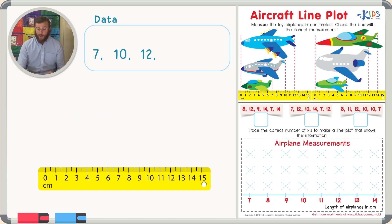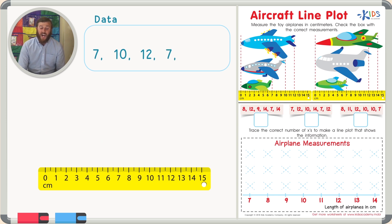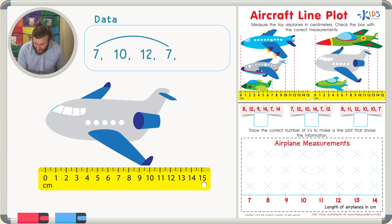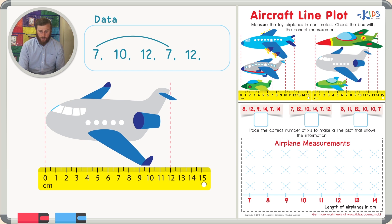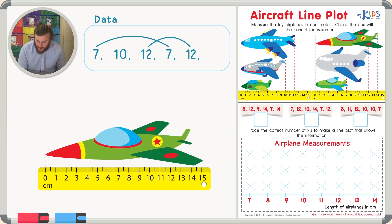The next three airplanes: another green airplane starts at zero and ends at seven — seven centimeters long. There are now two sevens. The second gray airplane also ends at 12, so another 12 centimeters. That gives us two twelves. The last big airplane starts at zero and ends at 14 — it's 14 centimeters long.